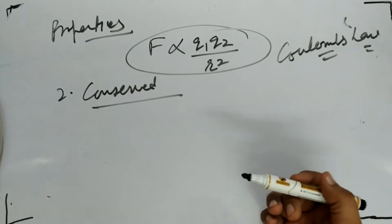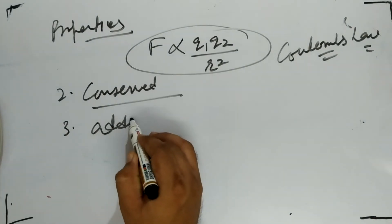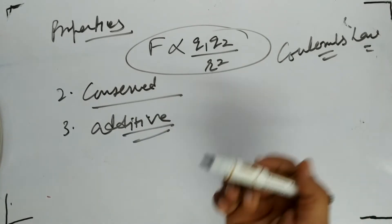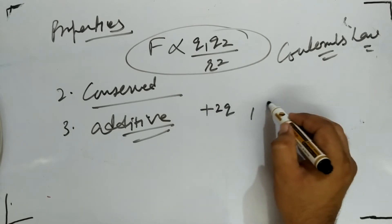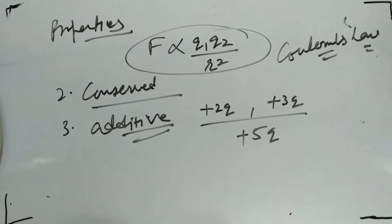Can neither be created nor be destroyed. Next property we have: charges are additive. Charges are additive, meaning suppose if you have plus 2Q charge and plus 3Q charge, then total will be 5Q, plus 5Q.